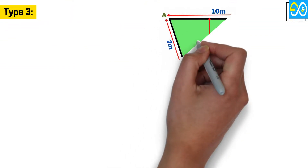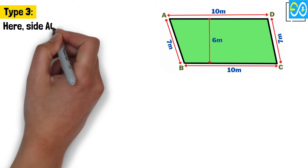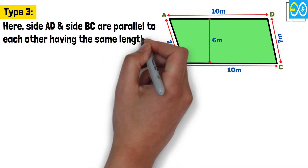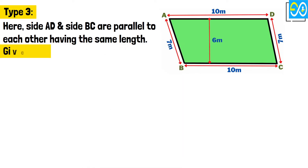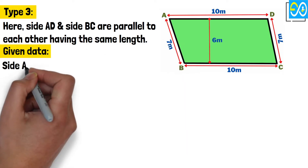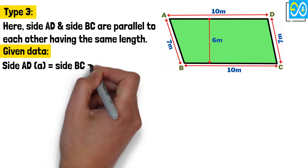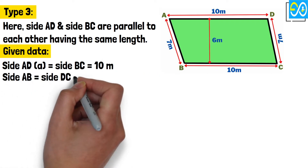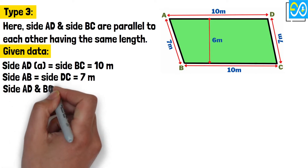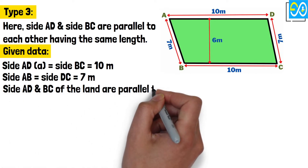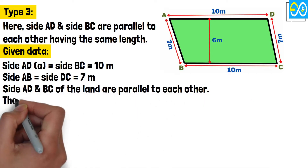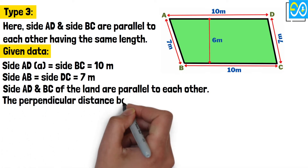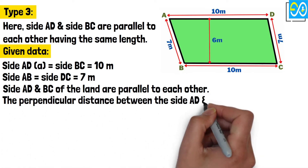Type 3. Here, side A, D and side B, C are parallel to each other having the same length. Given data: Side A, D equals side B, C equals 10 meters. Side A, B equals side D, C equals 7 meters. Side A, D and B, C of the land are parallel to each other. The perpendicular distance between side A, D and B, C, H, equals 6 meters.